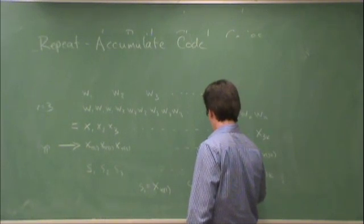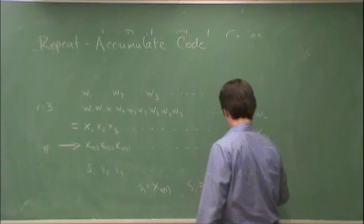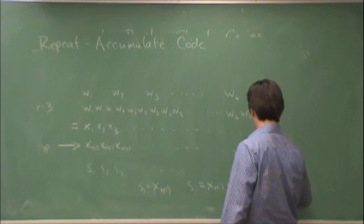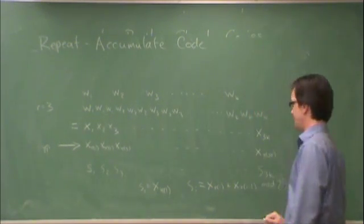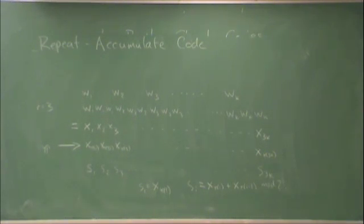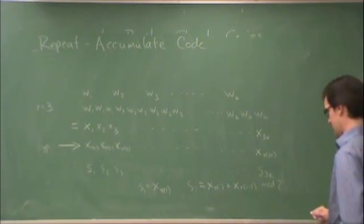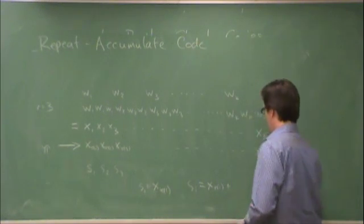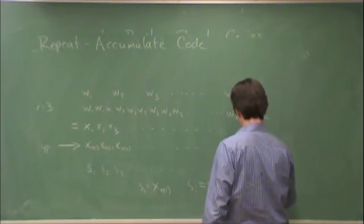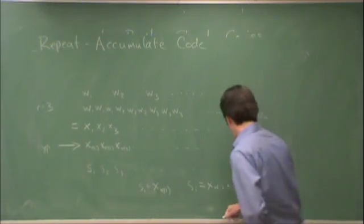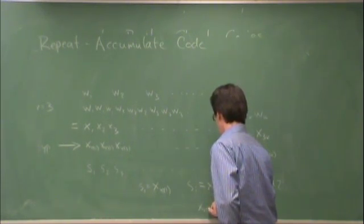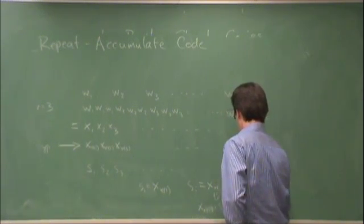x of pi i plus x of pi i minus 1 mod 2. So, in other words, you can take this and interpret it as x pi i plus s_i plus s_i minus 1.